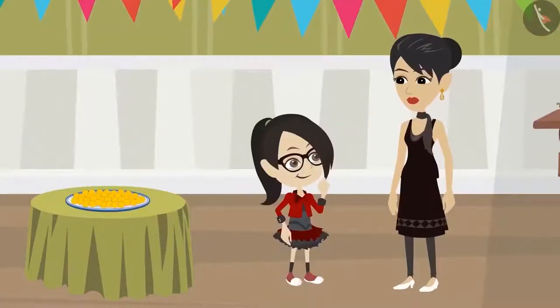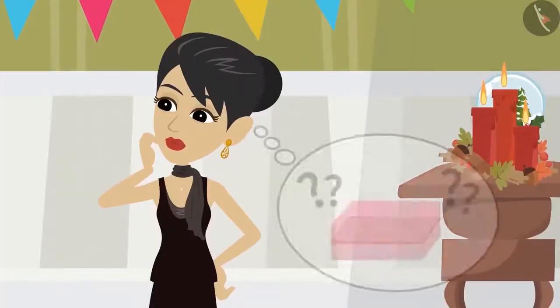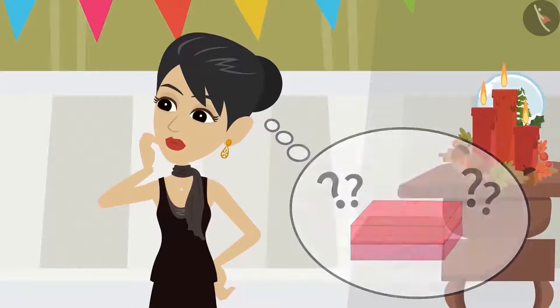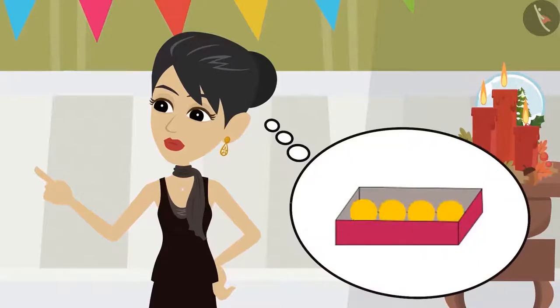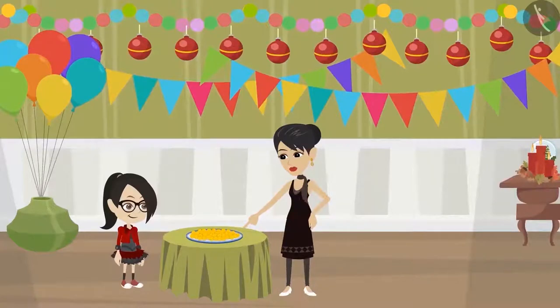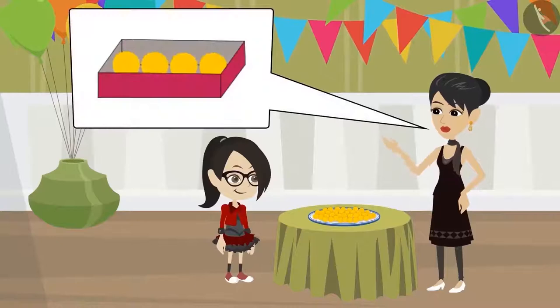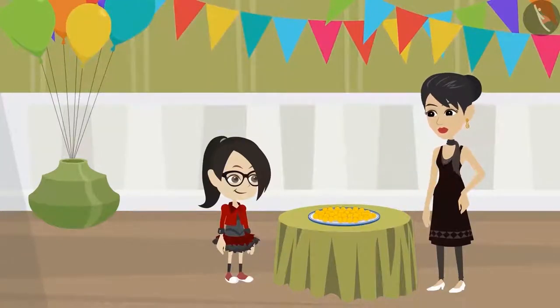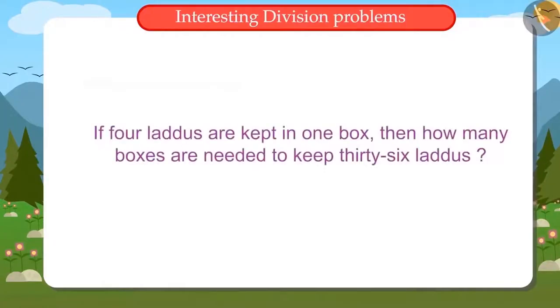Mummy asks Vandana to bring boxes from the market to keep the laddus. Vandana asks her, Mummy, how many boxes should I get? Mummy does not know how many boxes are needed. She only knows that four laddus are to be kept in one box. She asks Vandana to count the laddus and bring that many number of boxes in which all the laddus can be kept when four laddus are kept in one box. Now Vandana has to find out that if four laddus are kept in one box, then how many boxes are needed to keep thirty-six laddus?